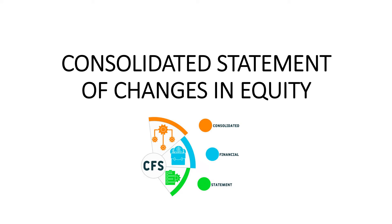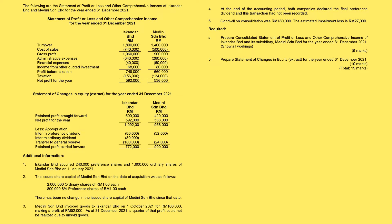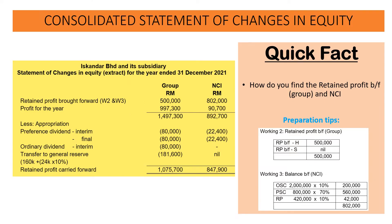Consolidated statement of changes in equity. In the preparation of the statement of changes in equity for the year ended 31 December 2021, we need to look through the items in the statement of changes in equity abstract given by the question. In preparing the consolidated statement of changes in equity, we have to find the retained profit brought forward for the group and also the retained profit brought forward for the NCI.